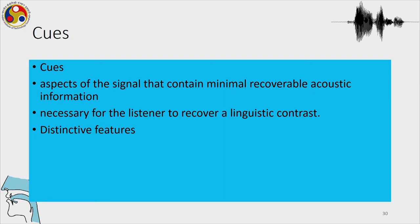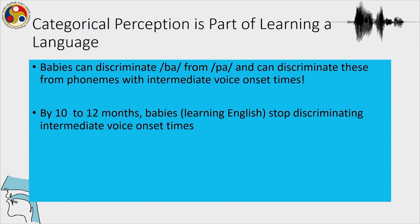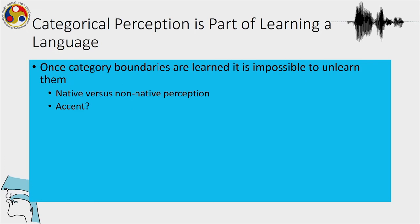Let us also talk about cues. Cues are aspects of the signal that contain minimally recoverable acoustic information, necessary for the speaker to recover a contrast, and they are related to developments in distinctive features. Categorical perception is considered part of learning a language. Babies can discriminate 'ba' from 'pa' and can discriminate these phonemes with intermediate voice onset times, but by 10 to 12 months babies stop discriminating intermediate voice onset times. After learning the category boundaries, it is not possible for infants to unlearn them.